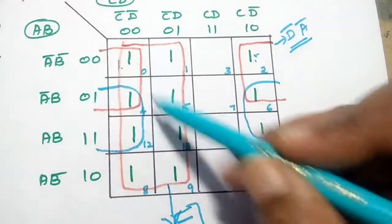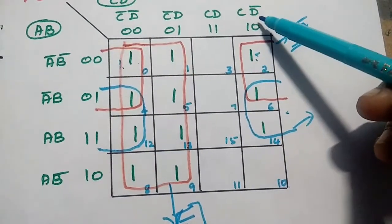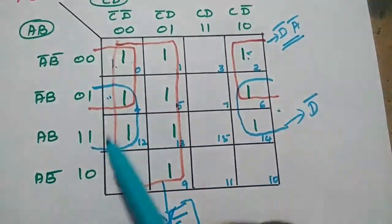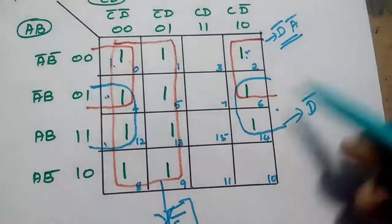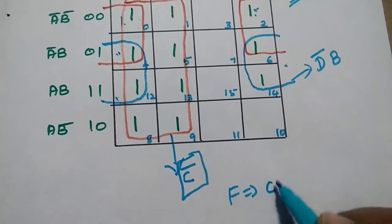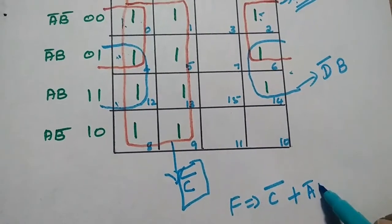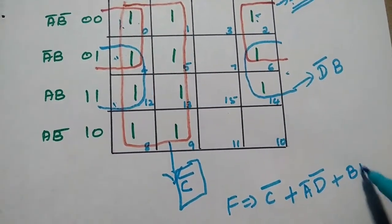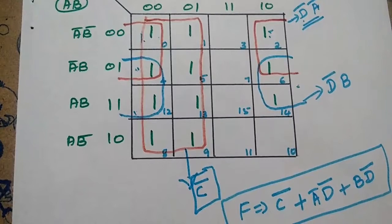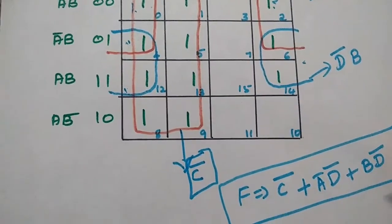For the third group of 4: D̄ is again the common column variable, and B is the common row variable. So this group is BD̄. Finally, summing all product terms, the function F equals C̄ + A̅D̄ + BD̄. This is the final answer. We can easily simplify any complex Boolean expression using the KMAP method to its simplified minimum SOP form.